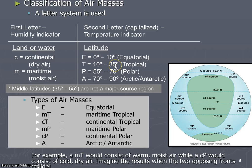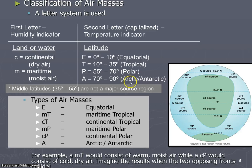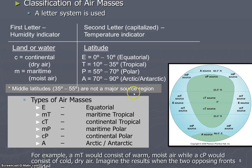This is the idealized model of the source regions of air masses, though we don't actually have a continent that looks exactly like this. From 55 degrees to 70 degrees north and south are considered polar, and from 70 degrees north and south up to the poles will be arctic and antarctic. Notice that the middle latitudes are not a major source region. In the United States, where we're between about 30 and 60 degrees north and south, you will see variable weather because it's the location where major air masses meet, not where they originate.